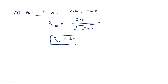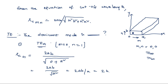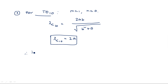Now, lambda c (01) = 2B and lambda c (10) = 2A. From the waveguide figure, A is larger than B, so 2A is greater than 2B. Therefore, lambda c (10) has the highest cutoff wavelength. The definition of dominant mode is the mode having the highest cutoff wavelength or least cutoff frequency. So the dominant mode for TE is TE10, with lambda c = 2A.